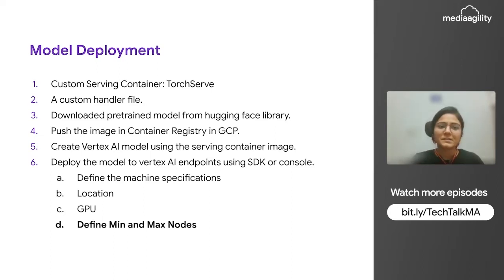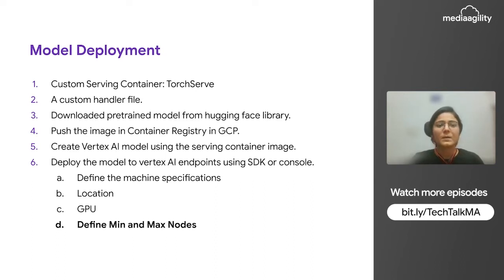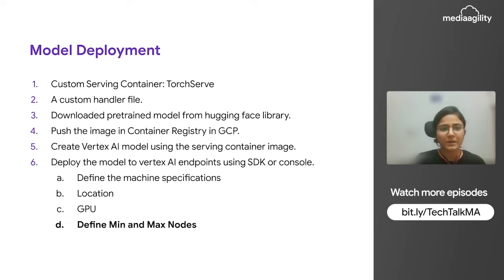Then we need a custom handler file which will basically have the methods we need to pre-process the input and the output, and also post-process the inferences of the model. Third, we download the pre-trained model from Hugging Face library and then do the fine-tuning on it. Then with this model and the custom handler file and the command to hit that model, we push that image into the container registry in GCP.